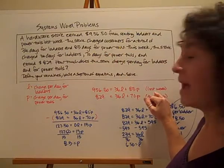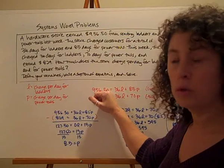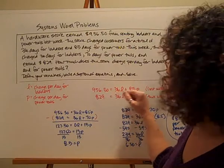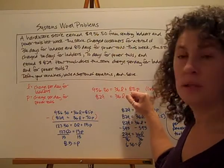I'm going to think about last week. Last week we earned $956.50, and that total amount was put together by charging for the ladder for 36 days and charging for power tools for 85 days. So there's the equation for last week.